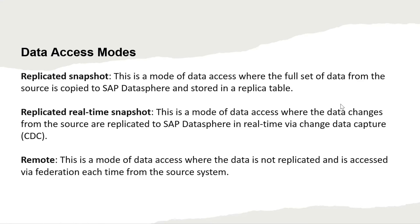The third data access mode is remote. In this mode, data is not replicated at all and is accessed by federation each time from the source table. Whenever a query is run, it requests the specific data from the source and the data is transmitted through the network. No storage is used and no data is stored in SAP Data Sphere when the mode is remote access.